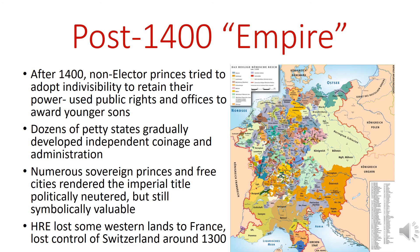Over time the Holy Roman Empire lost land in the west as the French advanced their frontier at the expense of the empire, and around 1300, not long after Rudolf of Habsburg became emperor, Switzerland managed to break away from the empire. Now that we've looked at the empire, we're pretty well set up to look at functional governments like the city-states of Italy or the national monarchies of England and France. So let's go do that.